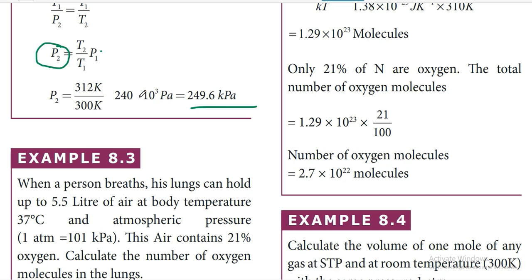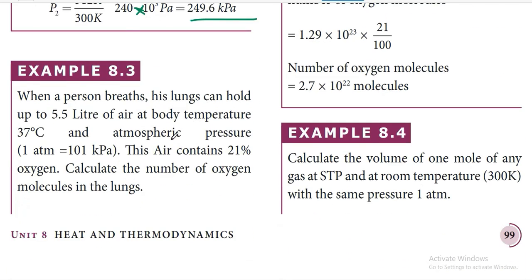P₁ is 240 kPa; converting to pascals, that is 240 × 10³ Pa. Note that the multiplication by 10³ must not be forgotten. Next, we will see the second problem: when a person breathes, his lungs can hold up to 5.5 liters of air at body temperature 37°C and atmospheric pressure of 101 kPa.